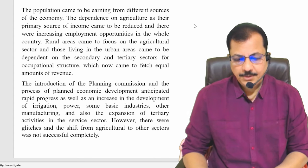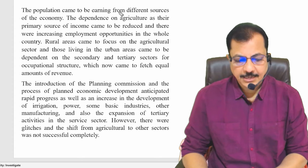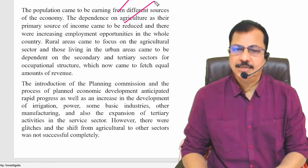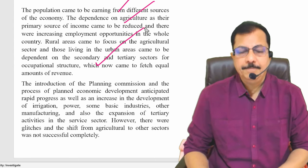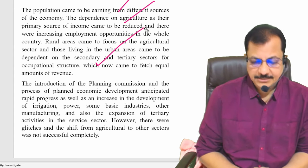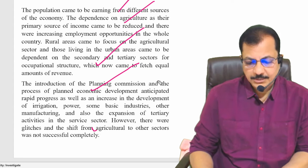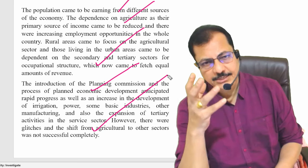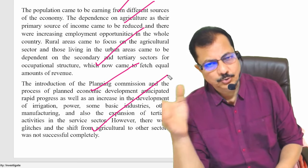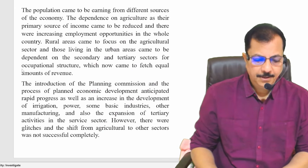The population started earning from different sources of the economy and dependence on agriculture was reduced, leading to increasing dependence on industries and service sectors. Later, the Planning Commission came into the picture and the government started following its recommendations, leading to the shift from agriculture to secondary and tertiary sectors.